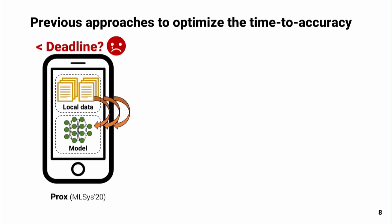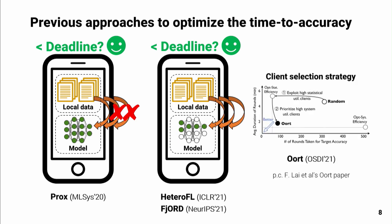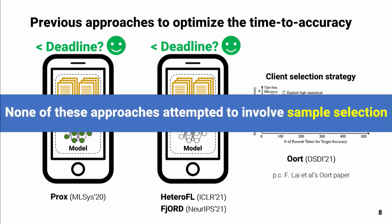There have been previous approaches that attempted to optimize time-to-accuracy performance. The first is FedProx, which allows low-end devices to perform fewer epochs to meet the deadline. Approaches such as HeteroFL or FjORD allow low-end devices to perform sub-model training to meet the deadline. Also, OORT proposes a client-selection strategy that considers both hardware speed and data contribution of each client. We observed that while these are great approaches, none of them attempted to involve sample selection.